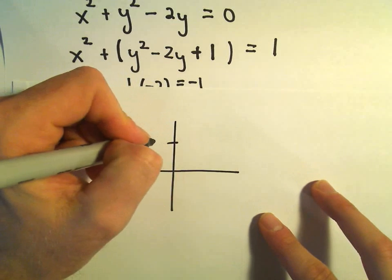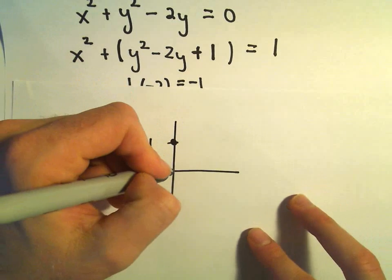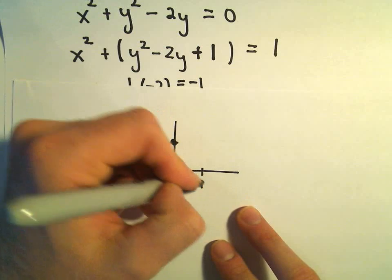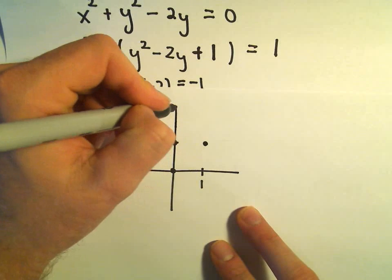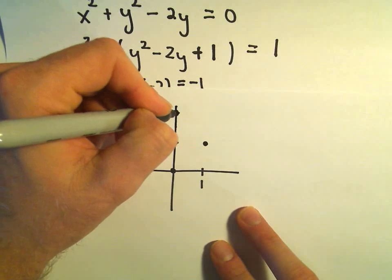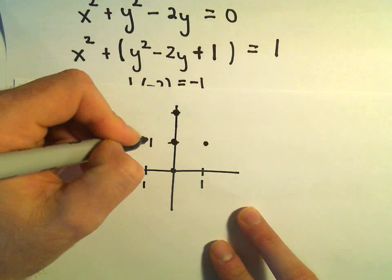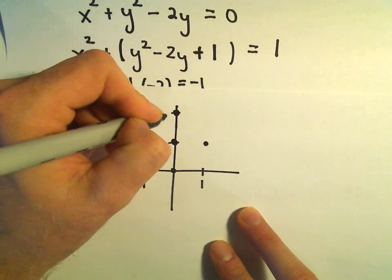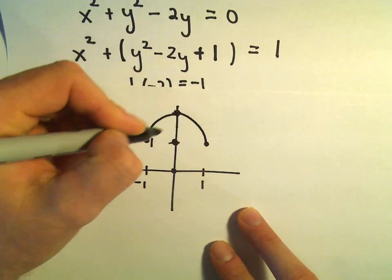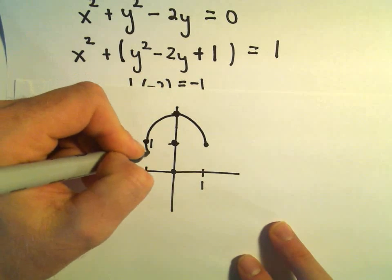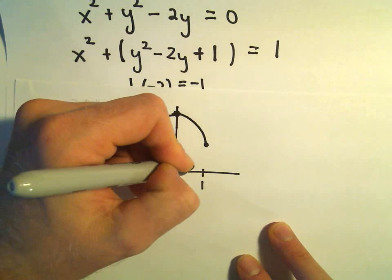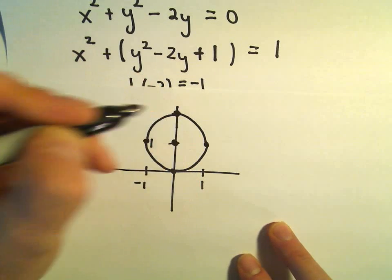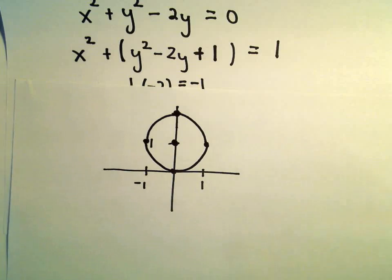So the center at (0, 1) would be up here. Radius 1. So here's (1, 1), there's (0, 2), negative 1, and 1 would be over there. So all we're doing is getting an equation of a circle that's been pushed up along the y-axis a little bit. And that's it.